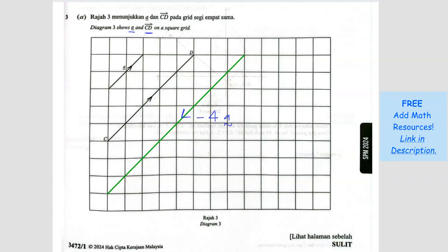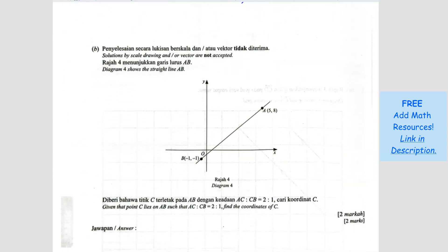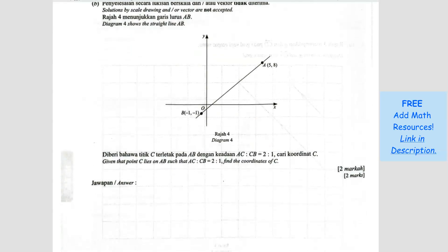So the CD is what again? It's two and a half, right? 2.5A. So that's how you solve it. Question B. Diagram 4 shows a straight line AB. Given that point C lies on AB.